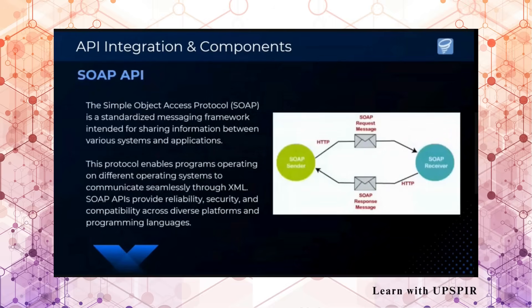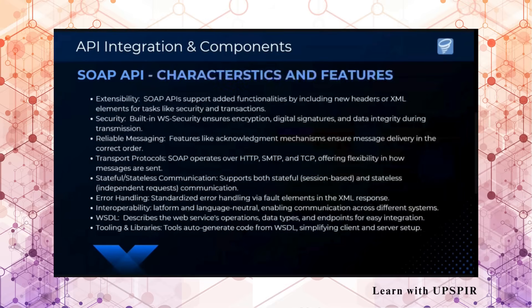SOAP API is a bit different — it is practically a messaging framework. This protocol enables programs operating on different operating systems to communicate seamlessly through XML. SOAP APIs provide reliability, security, and compatibility. In REST API, your message simply goes as an HTTP request and response. But in SOAP APIs, we package our message similarly to how you send letters — you put your letter into an envelope and then send it. SOAP does the same thing. It is highly extensible with built-in security and encryption, and it is a reliable messaging protocol.